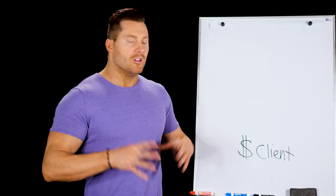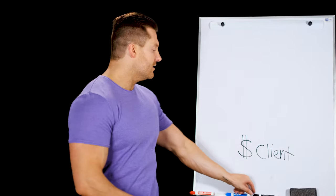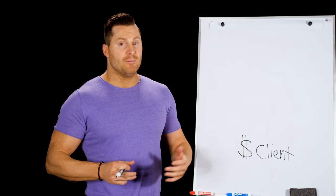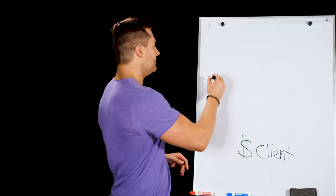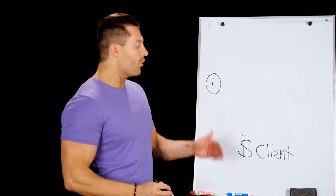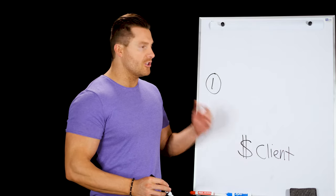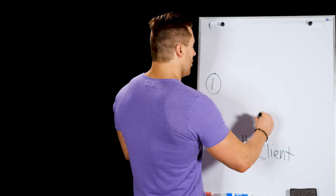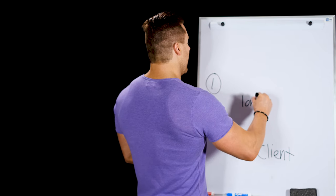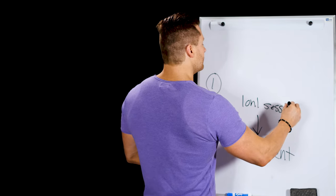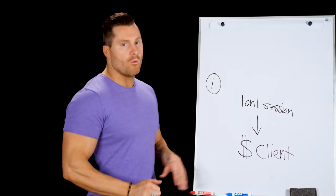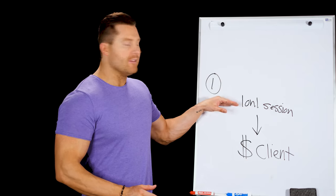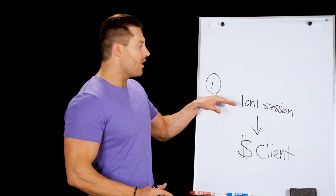So let's break down the funnel. This is essentially funnel number one and it's really simple. However, I've seen people break six figures just following a simple model just like this. So this is model number one: before you get a client — realtor gets a client, massage therapist gets a client — usually there's some type of one-on-one consultation meeting. So in order to get a paying client, you have a one-on-one session.